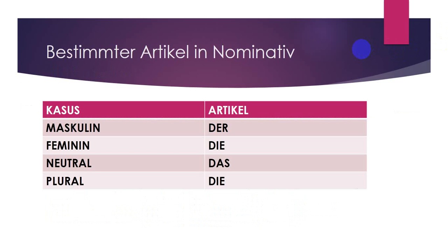First, the definite article in the nominative case. We have the cases: masculine takes 'der,' feminine takes 'die,' neuter takes 'das,' and plural takes 'die.' So we have two similar articles — 'die' appears for both feminine and plural, but in different contexts. We're going to focus on the word itself to pick the specific and suitable article.